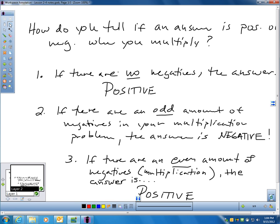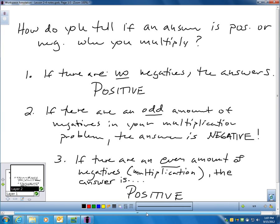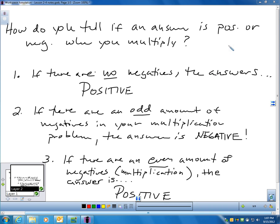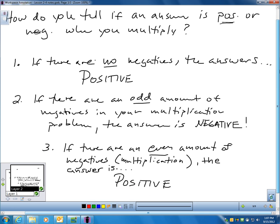The second major important thing we have to be able to do, because I will make you do much of this without a calculator, is how do you tell if an answer is positive or negative when you multiply? And I just always use three simple rules for that. If there's no negatives in the problem, the answer is obviously positive. You've done that your whole life. Any positive times a positive is a positive number.